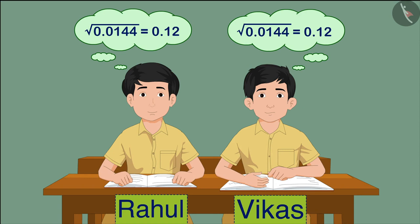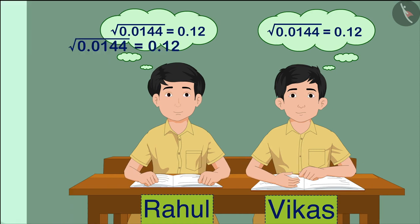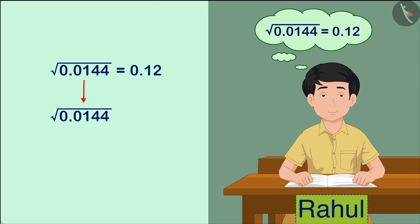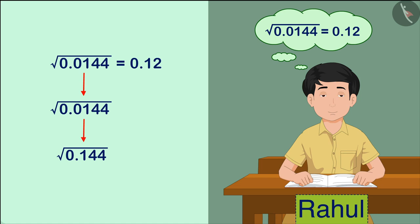The answer of both Rahul and Vikas is the same, but the understanding is different. Now let's look at Rahul's answer. He thought that there is no value of 0 after the decimal, so he removed the 0. This gave him the number 0.144.